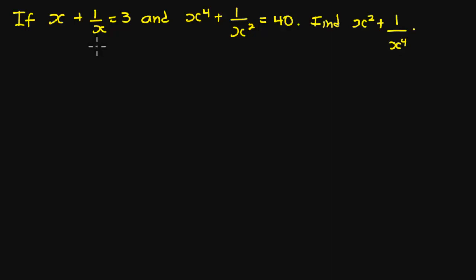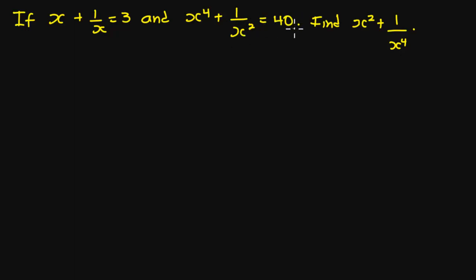Hello everyone and welcome to this channel. In this video, we are given that if s plus 1 over s is equal to 30, and s to the power 4 plus 1 over s squared is equal to 40, find s squared plus 1 over s to the power 4. So now let's start.